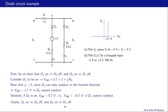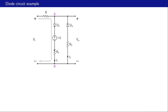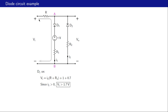With D1 conducting and D2 not conducting, the current path is through D1. By KVL, Vi equals I1·R plus 0.7 plus 1 plus I1·R1, that is I1·(R + R1) plus 1.7 volts. Since I1 must be positive, Vi must be greater than 1.7 volts for D1 to conduct.